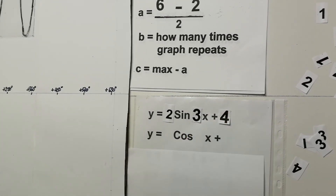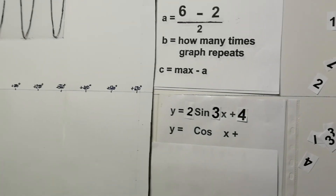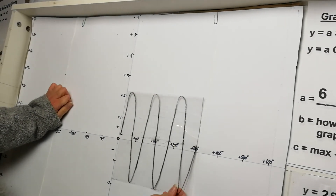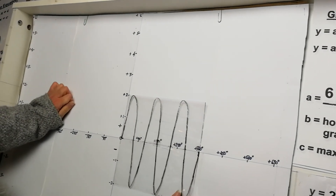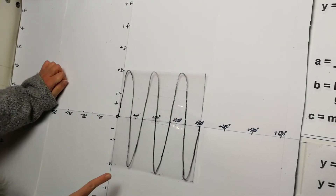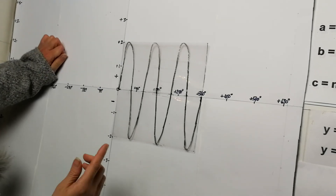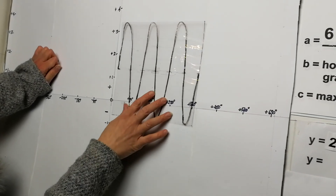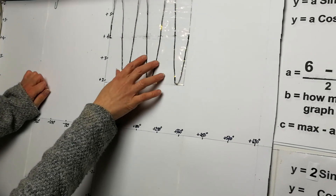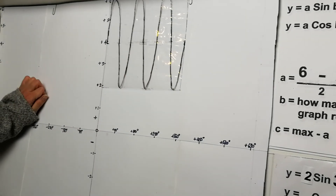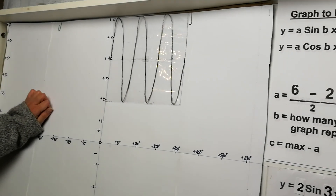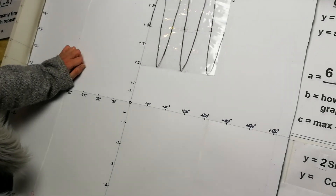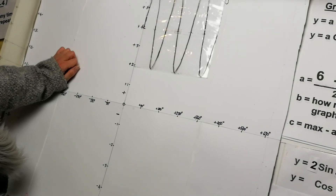For c: the maximum is 6 and the a value is 2, so 6 − 2 = 4. The equation is y = 2sin(3x) + 4. Normally 2sin(3x) would start centered at zero, but the +4 moves it up by 4, which is exactly what we see in the graph.